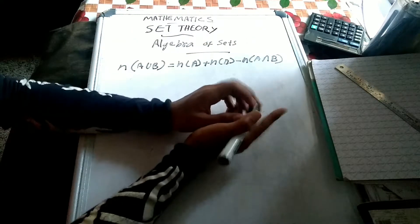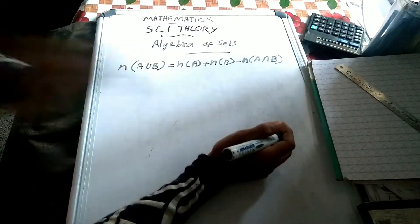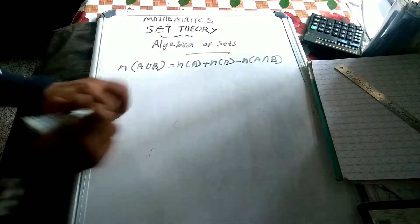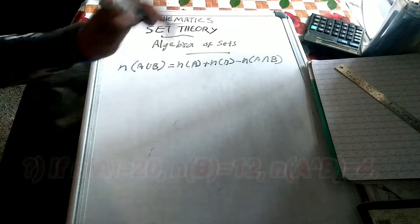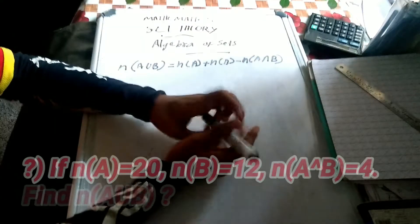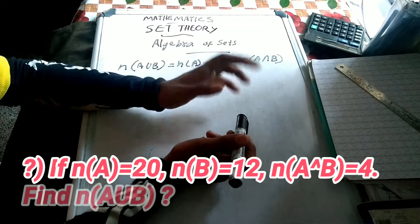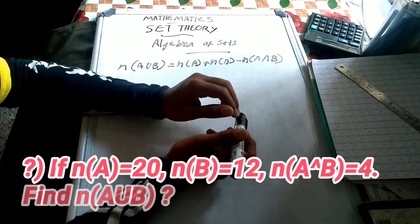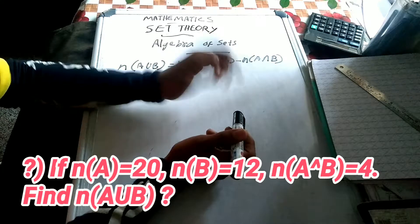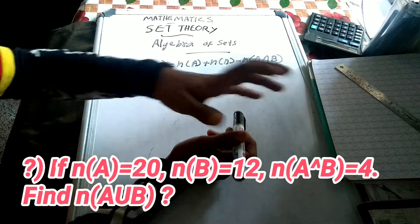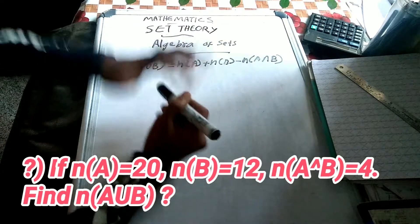Question one: If n(A) is equal to 20, n(B) is equal to 12, and n(A intersection B) is equal to 4, then find n(A union B).